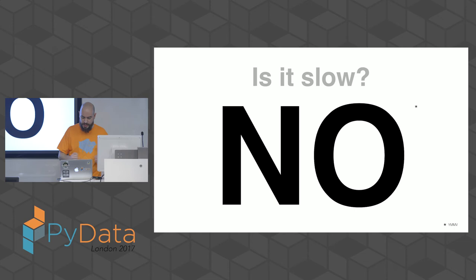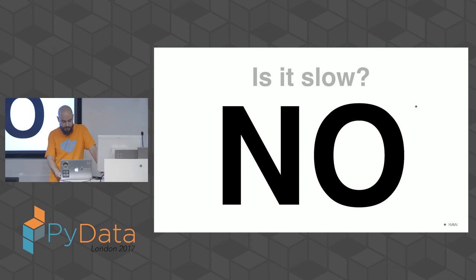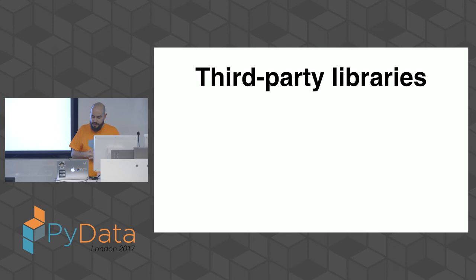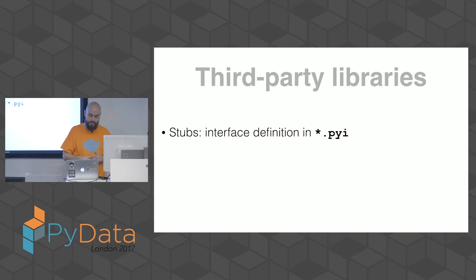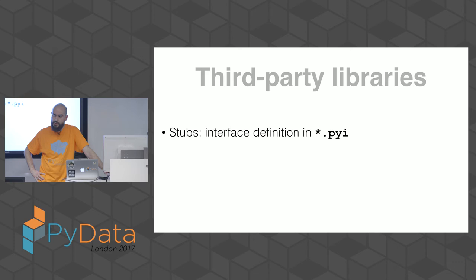Will it slow you down? The short answer is no — it's fast. Your unit tests will probably be slower than the static analysis. For third-party libraries, you need to understand their interfaces. There's an ongoing effort to write type stubs for common Python libraries — some like requests and lxml are already part of mypy. Otherwise you write interface definitions in .pyi stub files, which contain only the interfaces, not behavior.